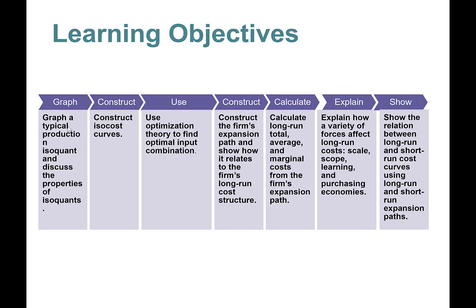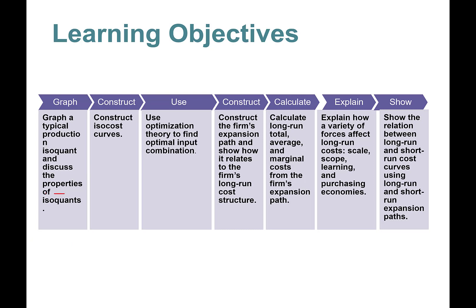These are our learning objectives. In part one, we'll learn about graphing a production isoquant and discuss the properties of isoquants. Then we will move on to isocost curves, followed by maximization — how to find the optimal input combination — and then we'll learn about a firm's expansion path and how it relates to a firm's long-run cost structure. Then we'll learn about calculating long-run total, average, and marginal cost curves.